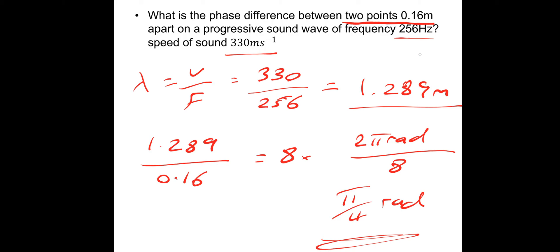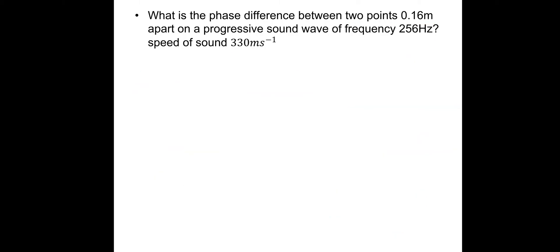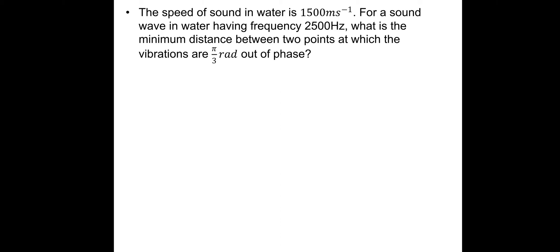Let's do one more. The speed of sound in water is 1500 m/s. For a sound wave in water having a frequency of 2500 hertz, what is the minimum distance between two points at which the vibrations are π/3 radians out of phase? For this one, we need to find the wavelength. So wavelength is V over F. So V is 1500 divided by frequency 2500, which gives a wavelength of 0.6 meters.